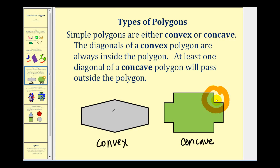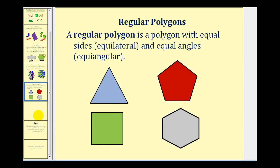You can also think of a concave polygon as having two sides caving toward the inside of the polygon. These two short sides here cave toward the inside, and therefore this is a concave polygon. The last topic of this video will be regular polygons. A regular polygon is a polygon where the sides are equal length, or equilateral, and the angles are of equal measure, or equiangular.